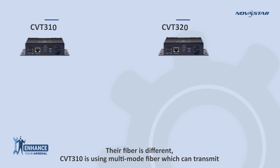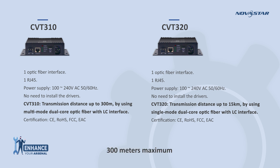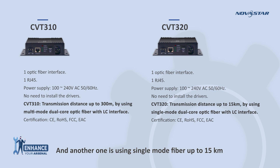What's the difference between CVT310 and CVT320? The fiber type is different. CVT310 uses multi-mode fiber, which can transmit up to 300 meters maximum, and CVT320 uses single-mode fiber, supporting up to 15 kilometers.